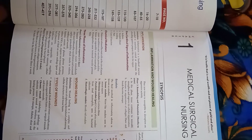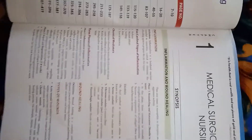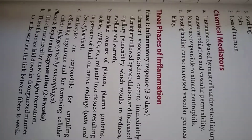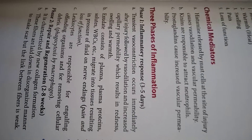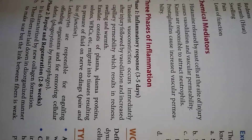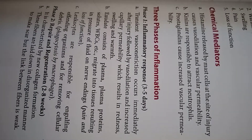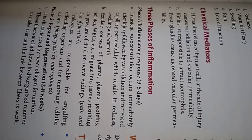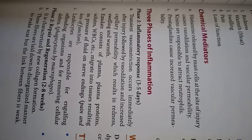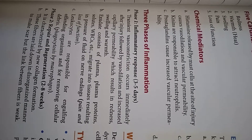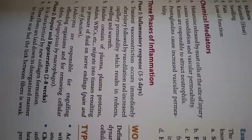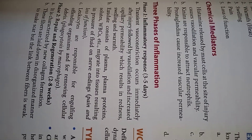There are 3 phases of inflammation. Phase 1 is the inflammatory response, which occurs in 3 to 5 days. Transient vasoconstriction occurs immediately after injury, followed by vasodilatation and increased capillary permeability, resulting in redness, swelling and warmth. The exudate consists of plasma, plasma proteins, solutes, and WBCs that migrate into the tissues, creating pressure of fluid on nerve endings. Leukocytes are responsible for engulfing the offending organism and removing cellular debris.